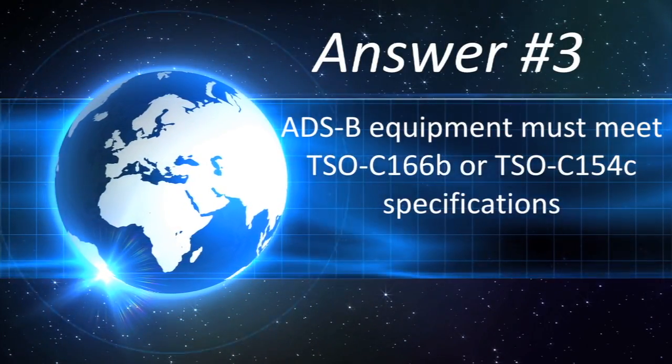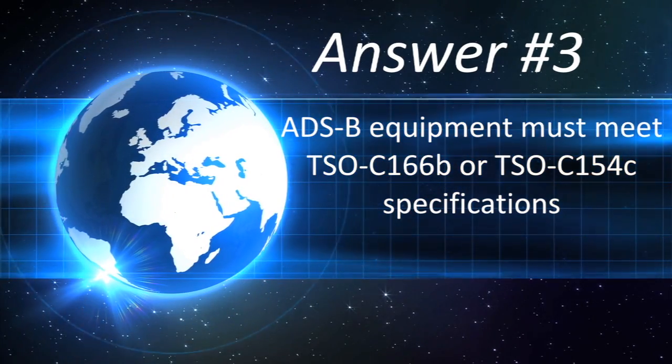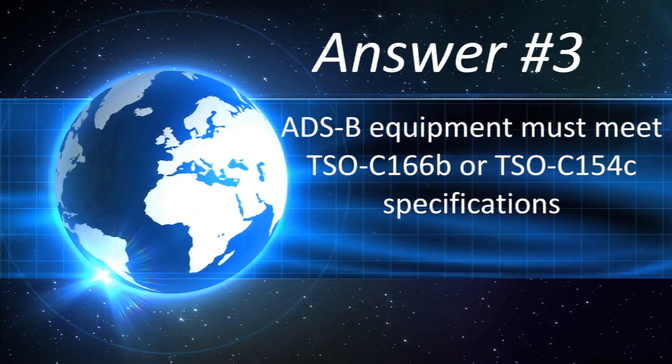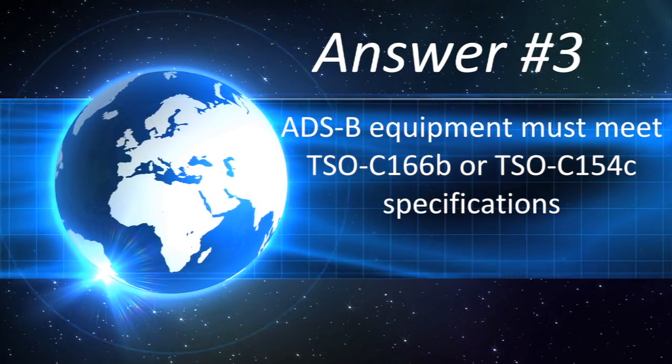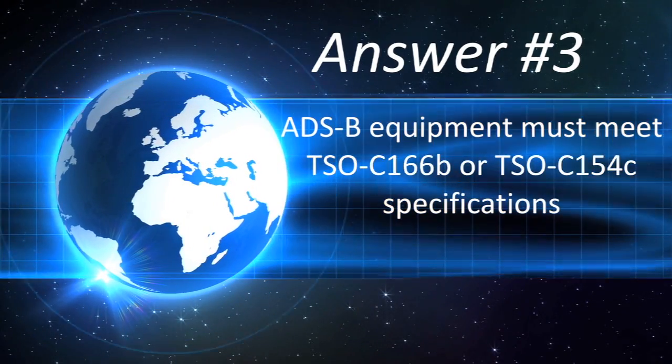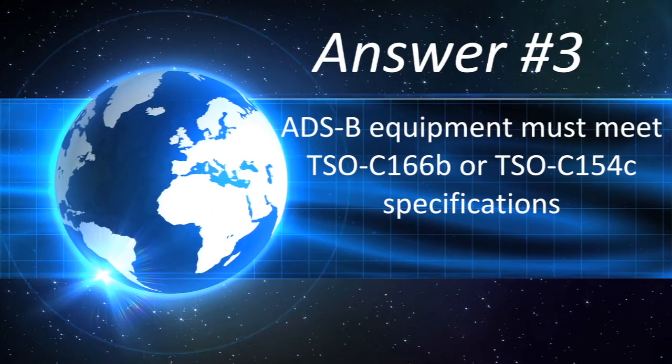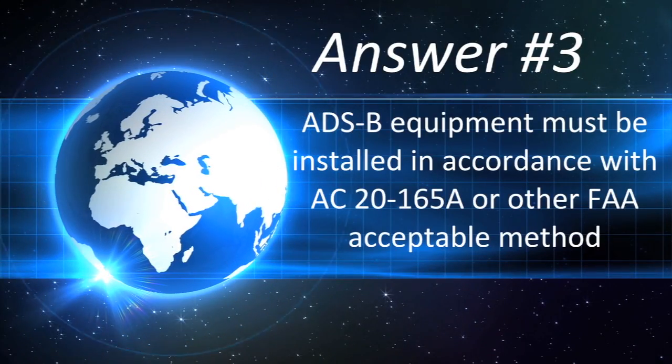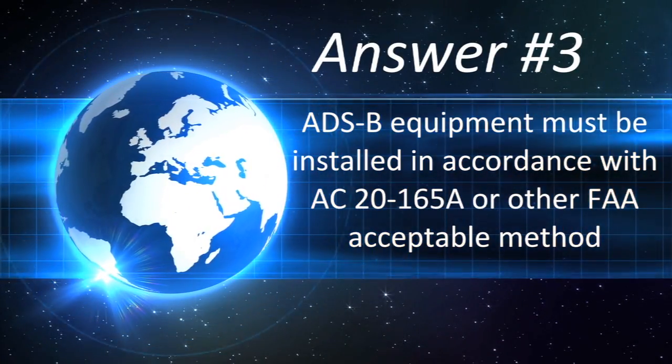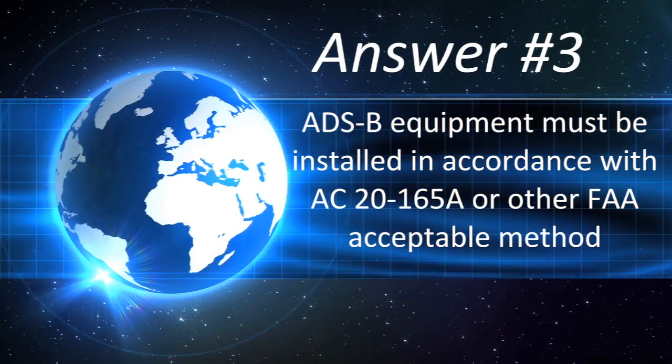There are a lot of ADS-B systems on the market. What's the best way to identify an approved system — in other words, compliant with FAR 91.225 and 91.227? ADS-B equipment must meet the requirements specified in TSO-C166B or TSO-C154C, and be installed in accordance with AC 20-165A or by another FAA acceptable method.